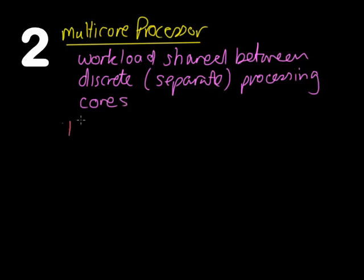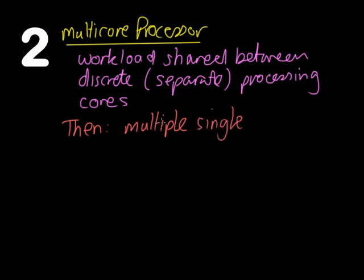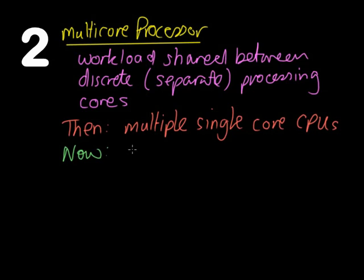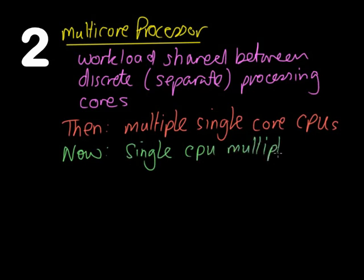In the old days, you used to use multiple single-core CPUs. I remember an old computer that had a coprocessor — it did lots of the maths calculations and took the load off the main CPU to allow things to run a little bit faster. Nowadays, things are slightly different. You use a single CPU with multiple cores in it.